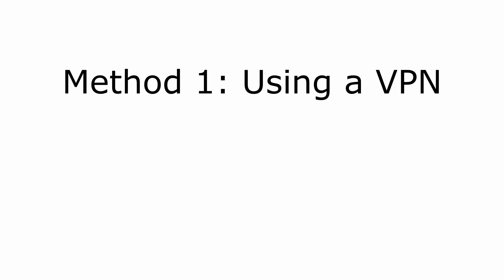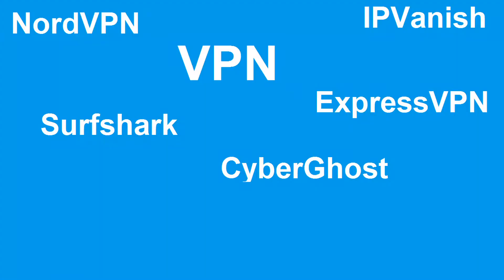Method 1: Using a VPN. A virtual private network, or VPN, is helpful when you are in a location that has limited coverage to streaming services. On your browser, you can turn on your VPN service and it will hide your IP address, so the streaming services cannot find your real location. That way, it will allow you access to contents that may be restricted in your area.